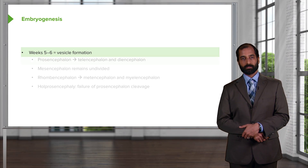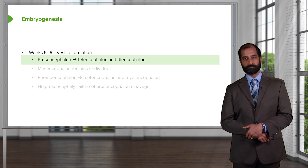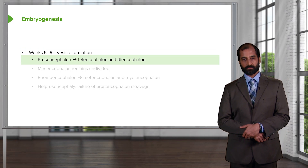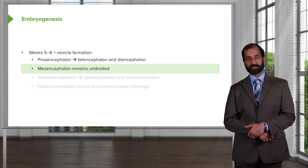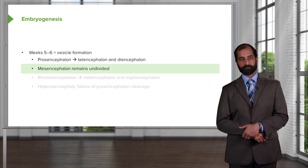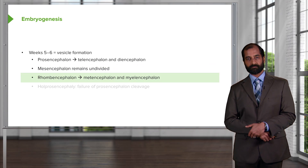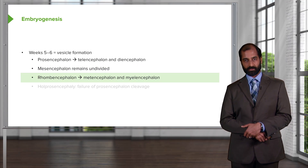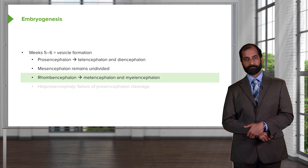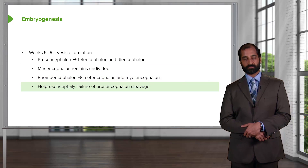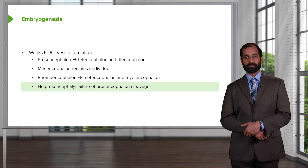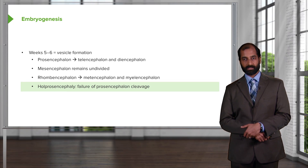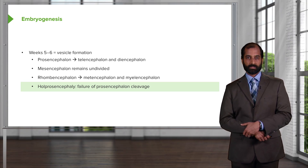In vesicle formation, the prosencephalon divides into the telencephalon and diencephalon. The mesencephalon remains undivided at five to six weeks. The rhombencephalon divides into the metencephalon and myelencephalon. Holoprosencephaly refers to the failure of the prosencephalon to divide or to cleave.